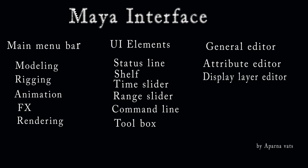Maya is a node-based system. Types of nodes include: transform nodes, which show parent-child relationships; shape nodes; auxiliary nodes; control nodes; hidden nodes; underworld nodes; rendering nodes; asset nodes; utility nodes; and script nodes.